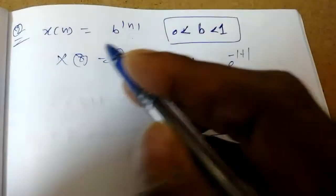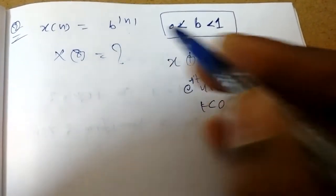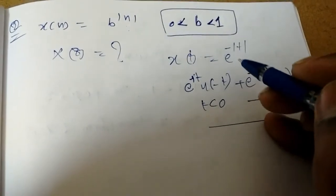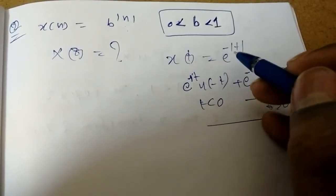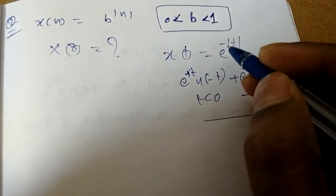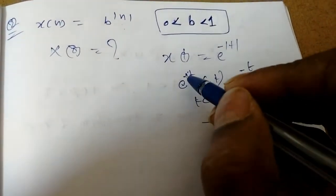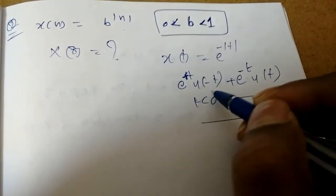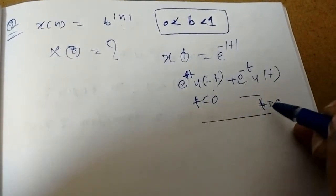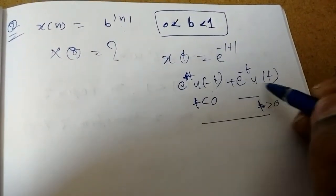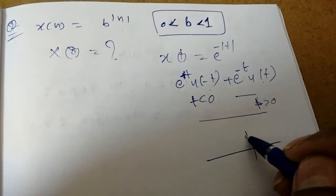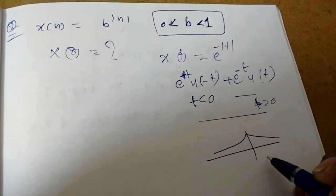In this type of signal, first we need to write the signal explicitly. If I take the continuous time signals, if e to the power minus mod t is there — for t less than 0, it becomes e to the power plus t into u of minus t. For t greater than 0, it is e power minus t into u of t. This is a two-sided sequence.